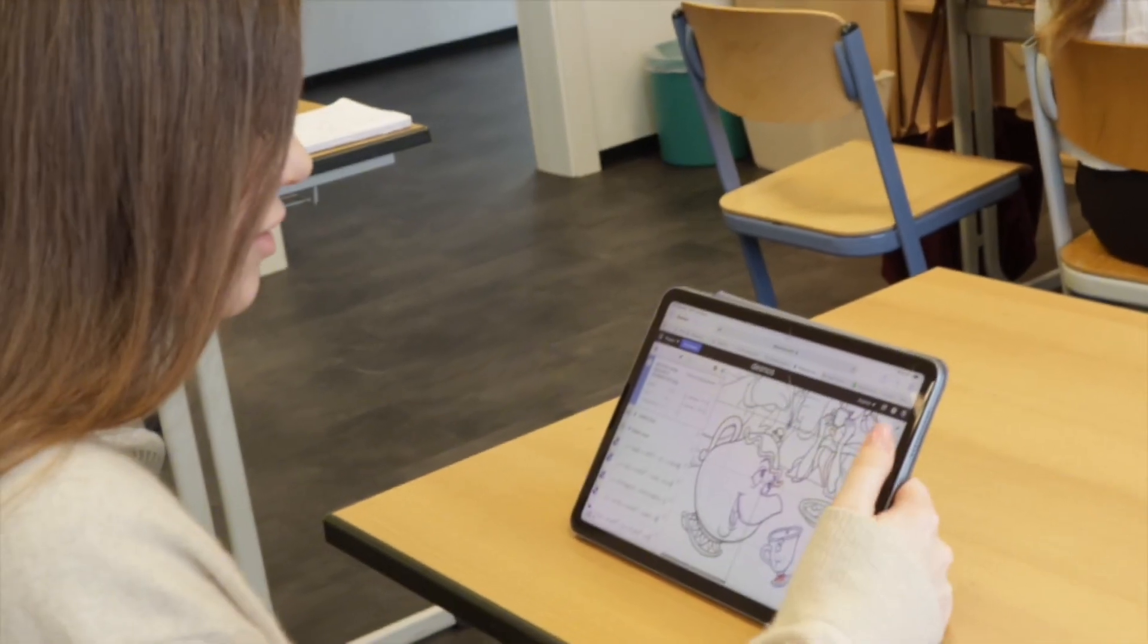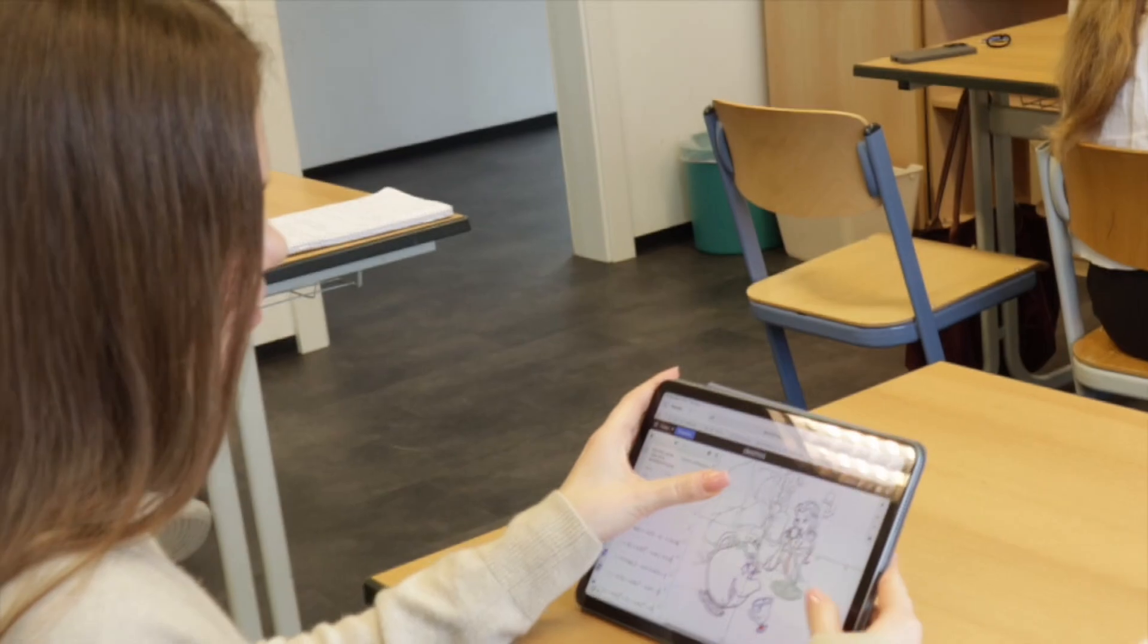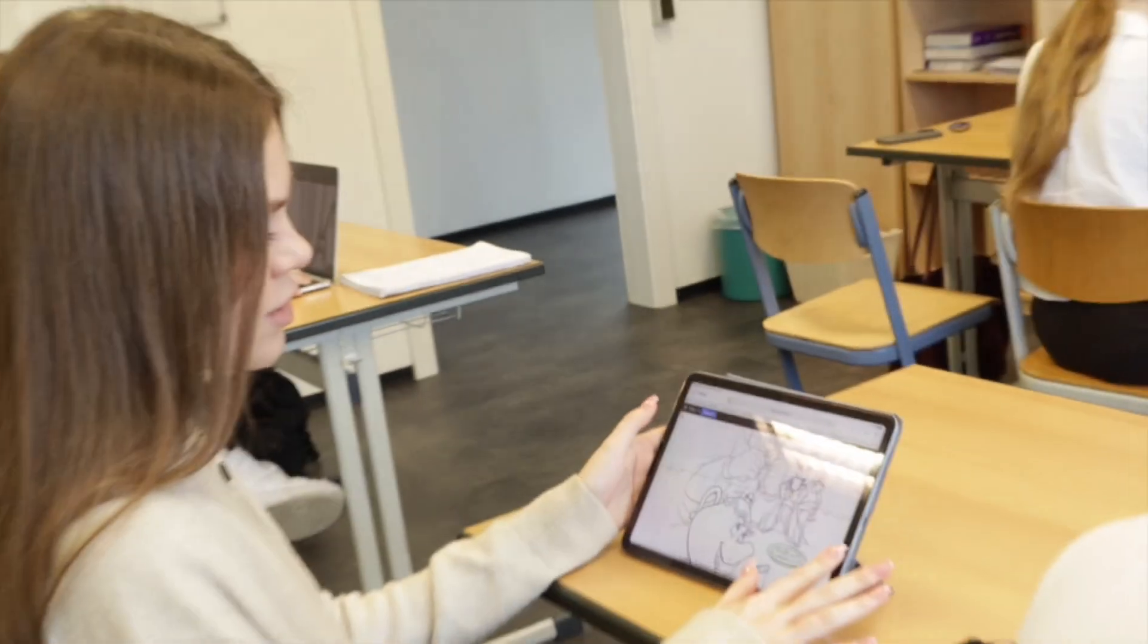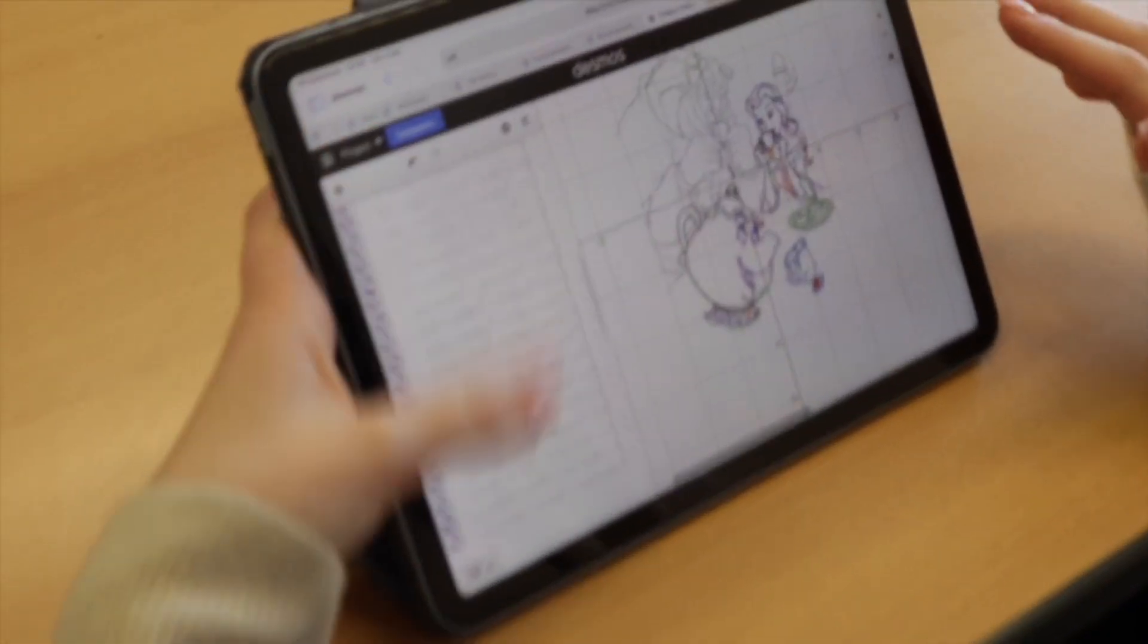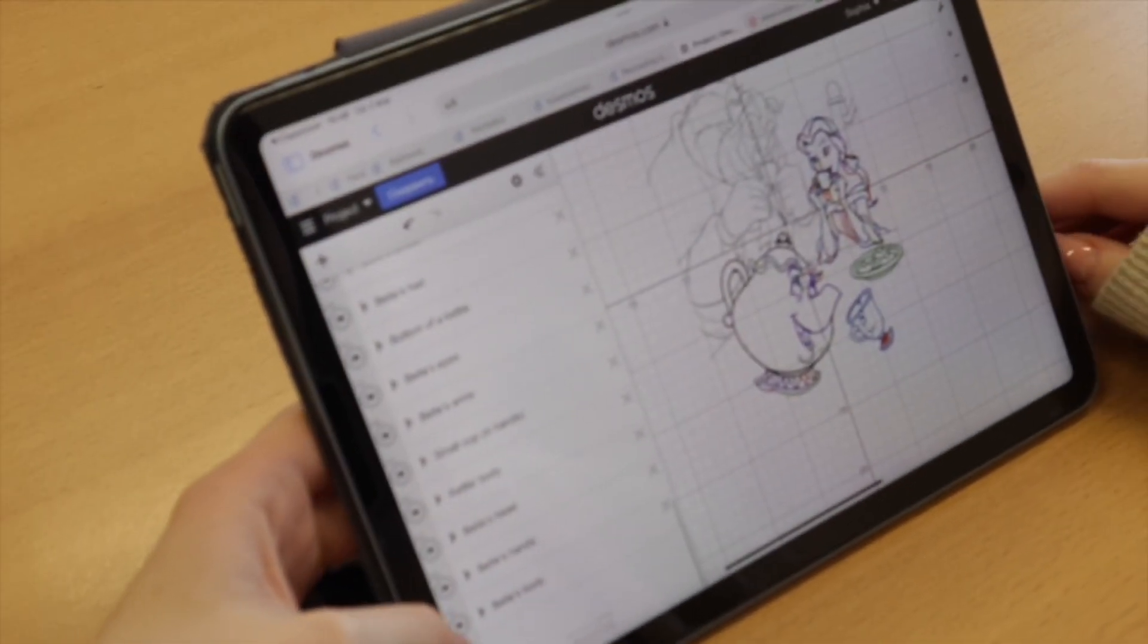So I created a graph from Beauty and the Beast, a cartoon which has a bell, kettle, a small chip and a plate.